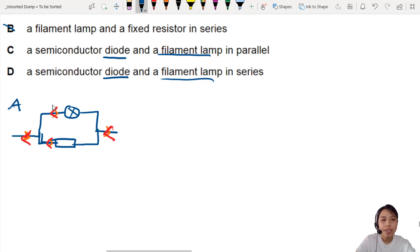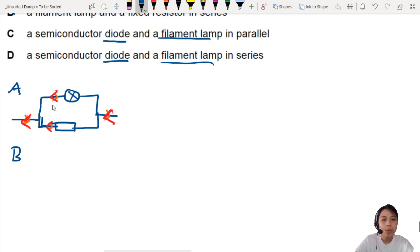B is filament lamp and fixed resistor in series. So something like this. The same problem here. You will allow current to flow in two directions, either this way or the other way. So nope, don't think that can work.